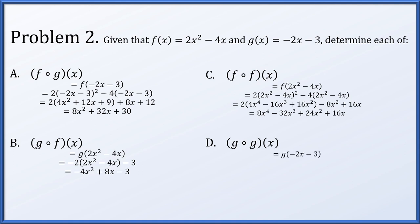Finally, g of g of x: g of x is negative 2x minus 3, so we plug that into itself — negative 2 times the quantity negative 2x minus 3 minus 3. After multiplying by negative 2 and collecting like terms, we get 4x plus 3.